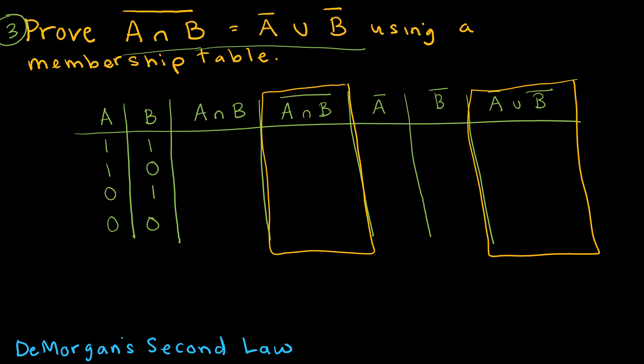For A intersect B: 1, 0, 0, 0 — it must be in both A and B. The complement of that is 0, 1, 1, 1 — the opposite. Complement A (negating A's column 1,1,0,0) gives 0, 0, 1, 1. Complement B (negating B's column 1,0,1,0) gives 0, 1, 0, 1. The union of complement A and complement B — needing a 1 in at least one column — gives 0, 1, 1, 1. That matches the complement of A intersect B column exactly, proving DeMorgan's second law via the membership table.